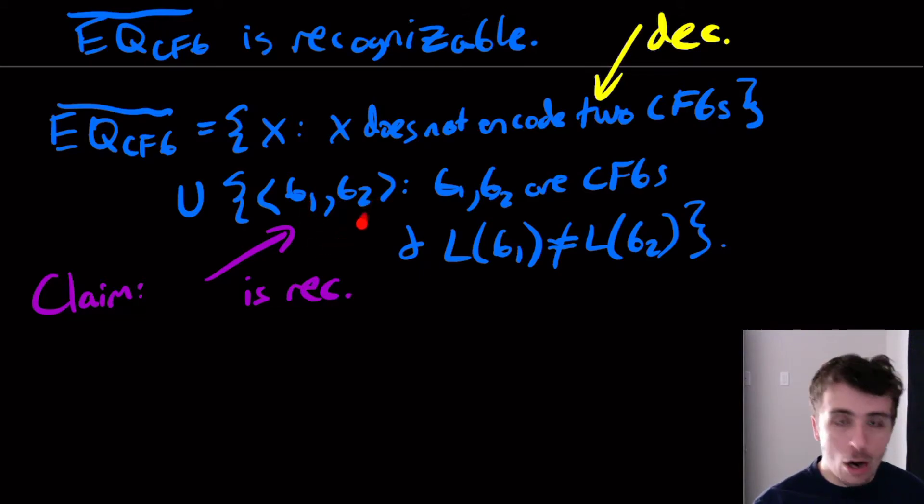So if they are different, if the two languages are different, then there must be one string somewhere where one of them accepts and the other one doesn't. That's just the nature of how it works. Because if you have two sets that are different, there must be something that is in one that is not in the other. That's the definition of sets not being the same.